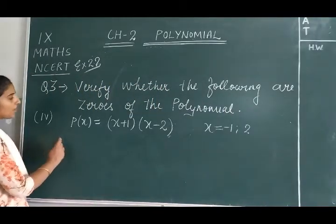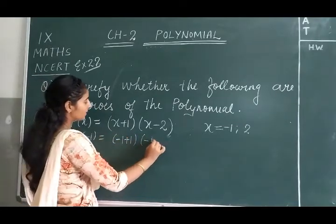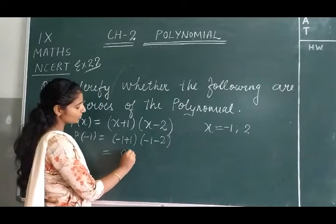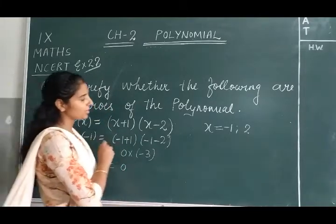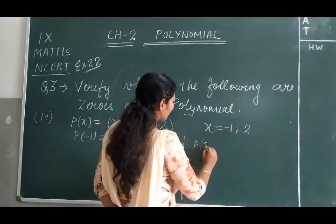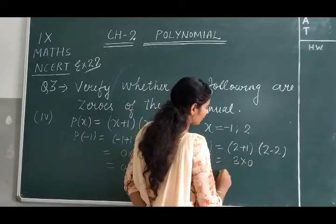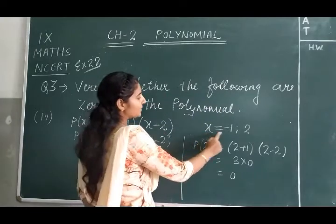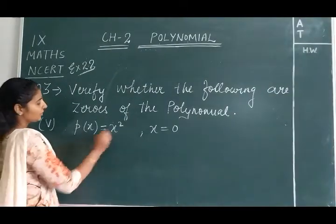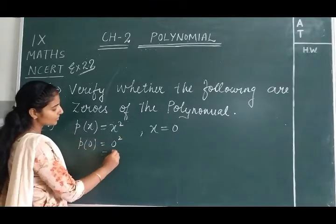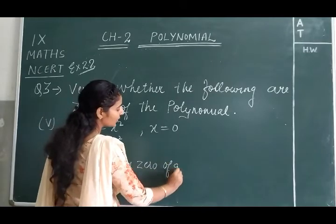The fourth part: for x = -1, we put (-1 + 1)(-1 - 2). Now -1 + 1 = 0, and 0 multiplied by any number is always 0, so yes it is a zero of the given polynomial. For x = 2: p(2) = (2 + 1)(2 - 2) = 3 × 0 = 0. So x = 2 is also a zero of the given polynomial. For the fifth part, p(0): 0² = 0, so x = 0 is a zero of the given polynomial.